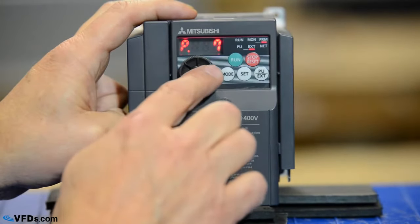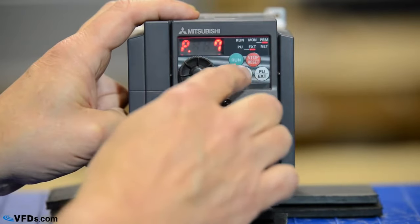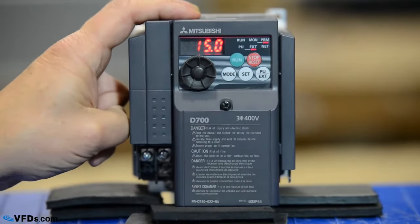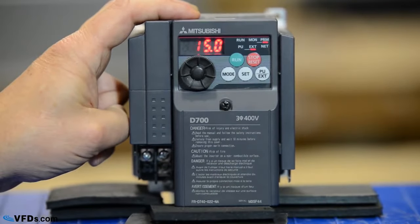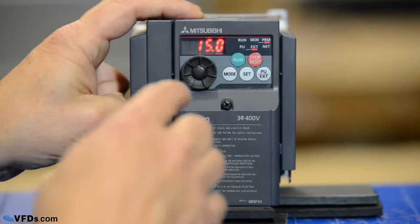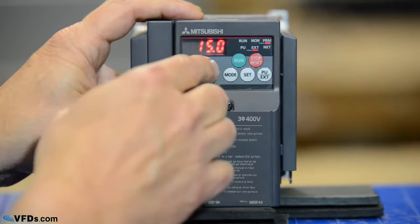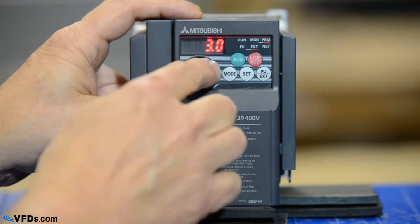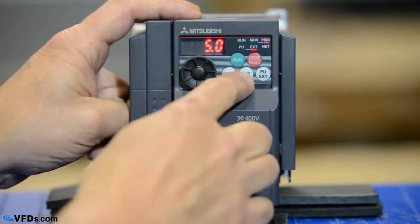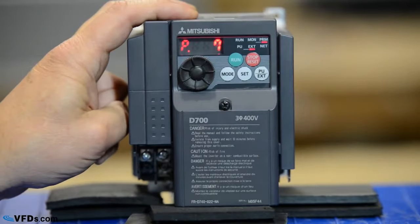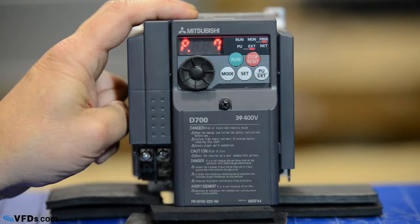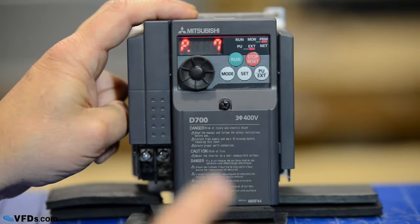Now let's go to parameter 7. This is the drive acceleration time. I push set and my acceleration time is 15 seconds. I'd like this small motor to accelerate in 5 seconds, so I'll change that to 5 seconds. Press set and now it will accelerate from 0 to 60 hertz in 5 seconds.